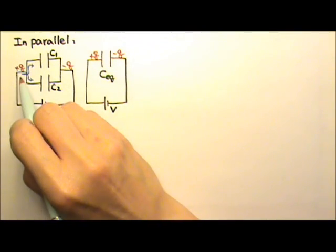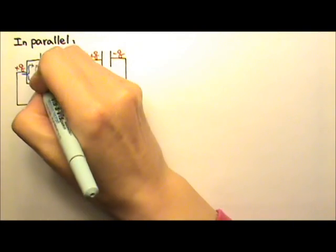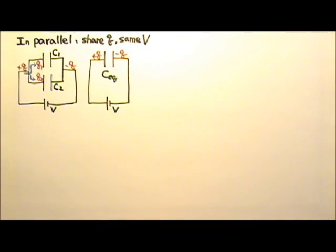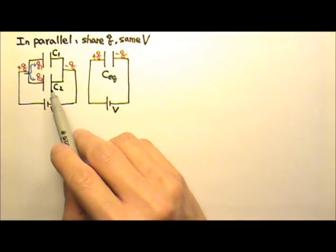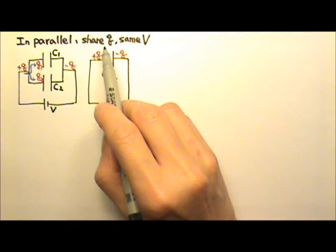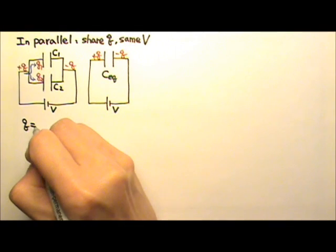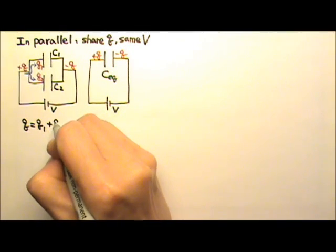When this positive Q gets here, it splits into Q1 and Q2. This means that when two capacitors are in parallel, they end up sharing the charge pumped by the battery. So Q equals Q1 plus Q2.